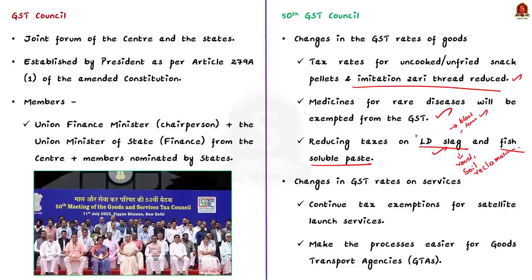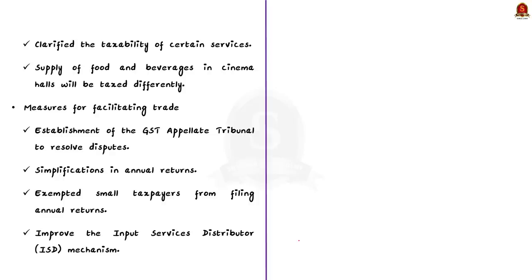The council made efforts to protect the environment by reducing taxes on LD slag and fish-soluble paste. LD slag, or Linz-Donawitz slag, is a by-product of the steel-making process that can be recycled for road construction, concrete production and soil improvement. Regarding changes in GST rates on services, the council suggested continuing tax exemption for satellite launch services and making the process easier for goods transport agencies. The council also clarified the taxability of certain services — for example, services provided by a director in their personal capacity will not be taxable, but services in their official role will be subject to tax.